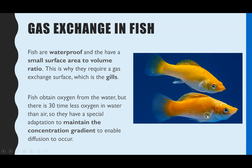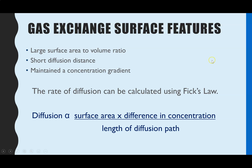Fish are waterproof because of their scales and they have a relatively small surface area to volume ratio, so they can't simply diffuse oxygen across their surface. They do require a gas exchange surface, which is the gills. Another consideration is that fish obtain their oxygen from water, which contains 30 times less oxygen compared to air, so they have special adaptations to maintain the concentration gradient and overcome that challenge.